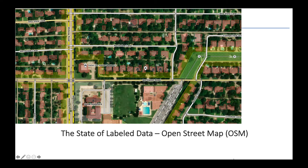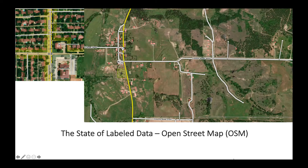First, let's look at the most widely available and publicly accessible labeled dataset, OpenStreetMap. Most populated areas like cities, houses, and roads are well labeled, but in rural areas the roads are not aligned with the image.